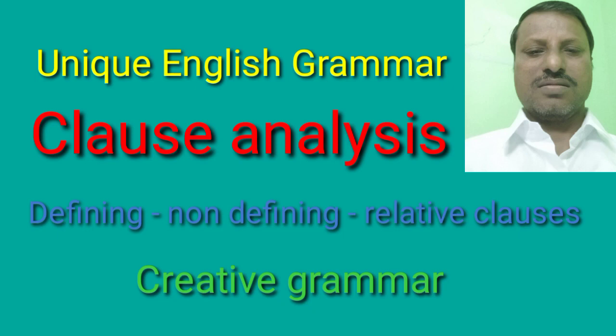With main clauses, co-ordinate conjunctions are used. Some of the co-ordinate conjunctions are: so, and, but, for, nor, or, yet. These are some of the co-ordinate conjunctions and they are used with main clauses, while subordinate conjunctions are used with subordinate clauses.